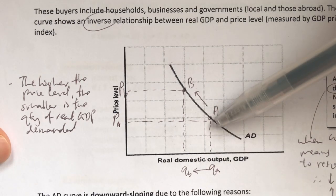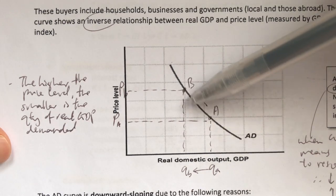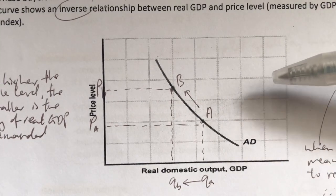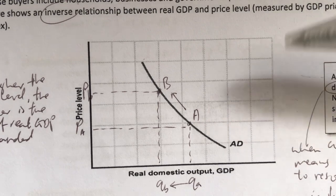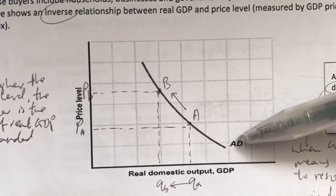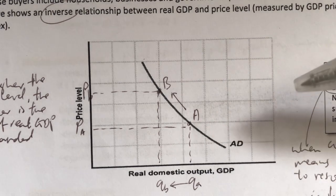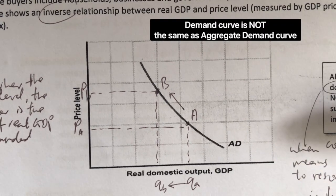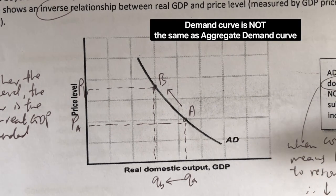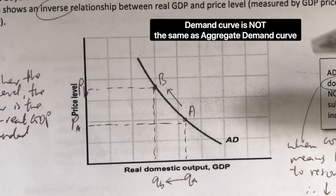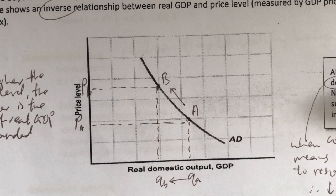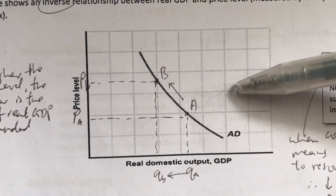What that means is there's an upward or backward movement along the same aggregate demand curve. Now, the reason why the AD curve is downward sloping is not the same as the reason why the demand curve is downward sloping. If any of you have learned principles of microeconomics before, you would remember that one of the reasons why the demand curve is downward sloping is due to the substitution and income effect. But that is not the case for the aggregate demand curve.